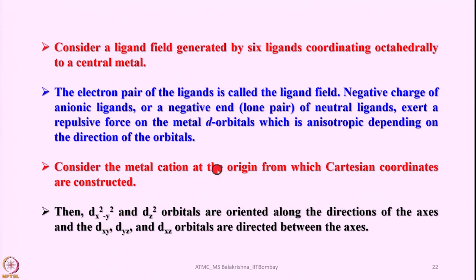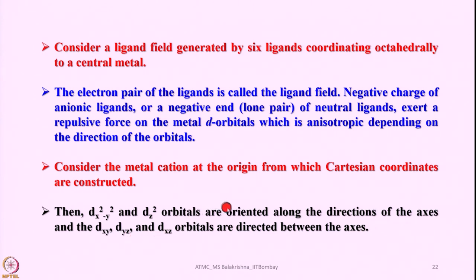dx²-y² is oriented along the x and -x and y and -y axes; dz² is along the z axis. Therefore, the ligands approaching along these directions would experience maximum repulsion, and as a result the energy of these orbitals is elevated. On the other hand, the remaining d orbitals — dxy, dyz, and dzx — are oriented between these axes and between these planes, so they experience less repulsive force from the ligand electrons, and their energy is lowered with respect to the barycentre.